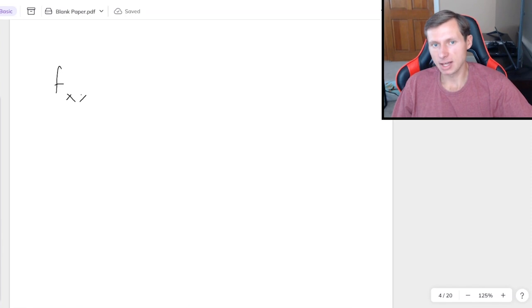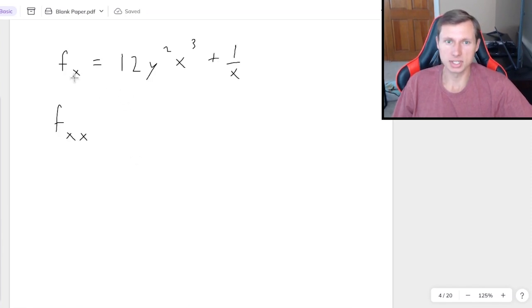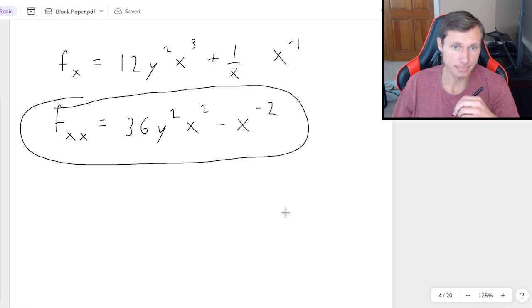Now let's talk about finding fxx together. So first, as a reminder, here was partial derivative of x. If you want to take the partial derivative of x again, it's going to be power rule. 3 times 12 is 36. y squared is a coefficient. And now it's x squared there. And then for 1 over x, remember that's really x to the minus 1 power. So minus x to the negative second power. And that's fine, just writing it like that. So that's how you do second derivative of x.